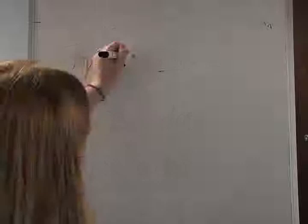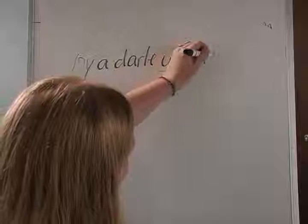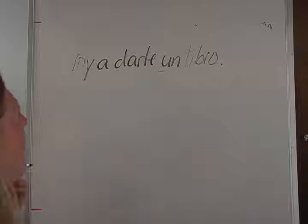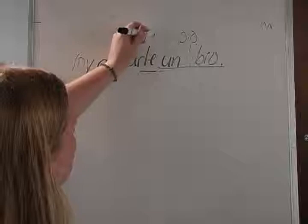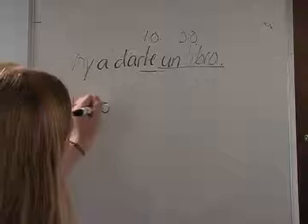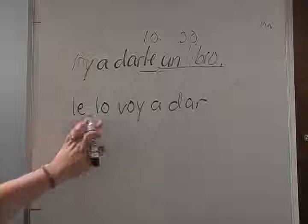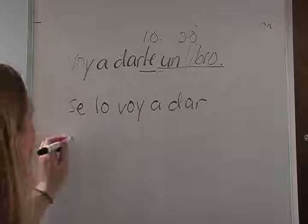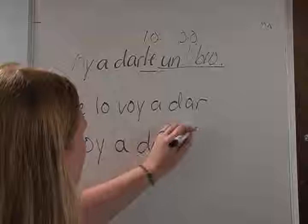Voy a darle un libro. This sentence has two verbs, so we're going to rewrite it two ways. What do we give? Un libro is your direct. Who do we give it to? Le is your indirect. The first way: put your pronouns in front of the conjugated verb — le lo voy a dar. We can't have the two L's, so we change le to se: se lo voy a dar. The other way: voy a dar se lo — comprando everything to the infinitive, giving us dárselo, and then add your accent on the A.